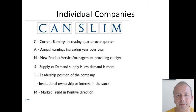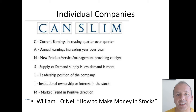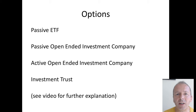You could use the CanSlim framework made famous by William O'Neill in his book 'How to Make Money in Stocks.' If you've got a system for sifting through companies then that would be really useful. But I'm more interested in funds — either passive ETFs, open-ended investment companies, or investment trusts — and I've done a video that gives an explanation of the differences between those.